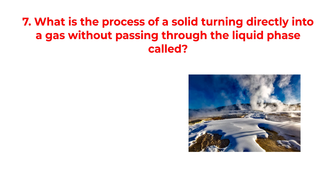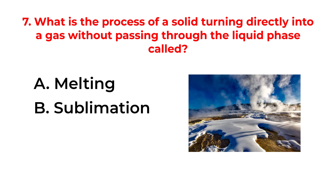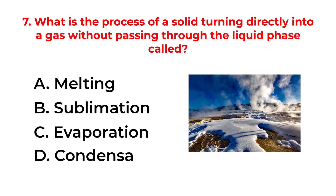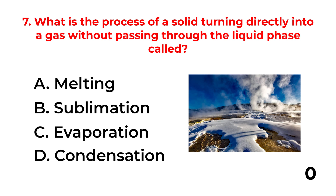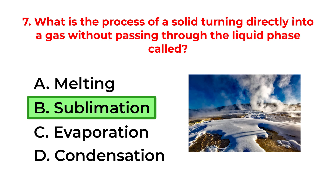What is the process of a solid turning directly into a gas without passing through the liquid phase called? A. Melting. B. Sublimation. C. Evaporation. D. Condensation. The correct answer is option B: Sublimation.